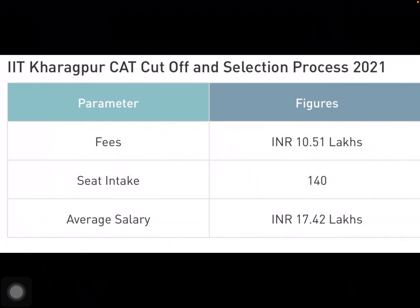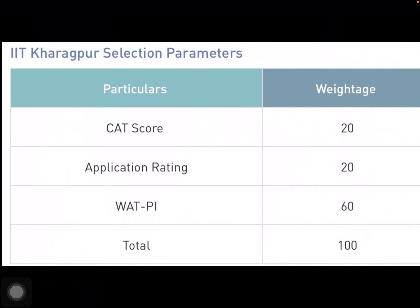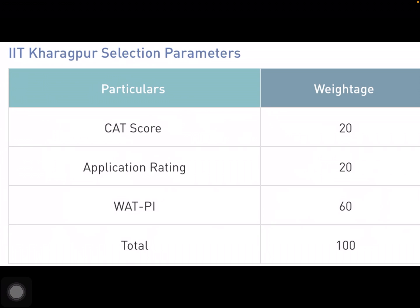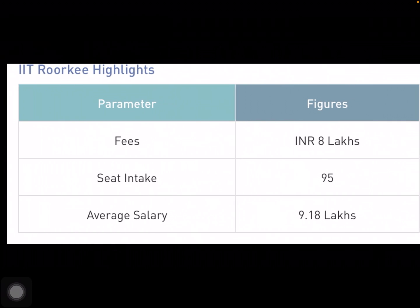Now for IIT Kharagpur: fees are 10.51 lakhs, seat intake is 140, and average salary is 17.42 lakhs. Regarding selection parameters, CAT score accounts for 20%, application rating is 20%, and WAT/PI carries the highest weightage. IIT Kharagpur gives maximum weightage to WAT and PI — the written aptitude test, which is essentially an essay writing exercise, plus personal interview — worth 60 marks combined.